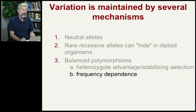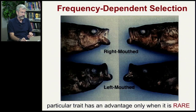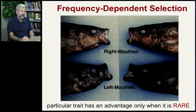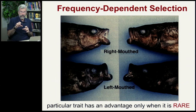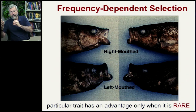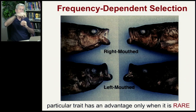Another way to maintain a polymorphism is through a process known as frequency dependence. Here's a fun example: a fish living in one of the Great Lakes of Africa that sneaks up alongside a much bigger fish swimming in parallel, then suddenly bites a chunk out of its side. Amazingly, this fish has an asymmetric mouth — a right-mouthed fish has its mouth pointing off to the right, so it swims up on the left-hand side and bites quickly to the right before the big fish can react.